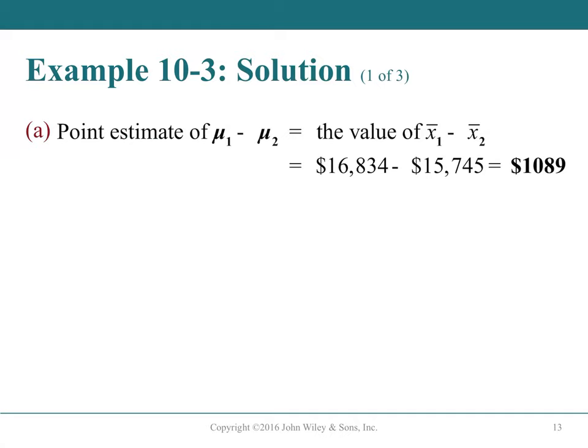The point estimate is easy: subtract the 2012 sample mean from the 2014 sample mean. Premiums increased by $1,089 over the two-year period—informative and straightforward to compute.